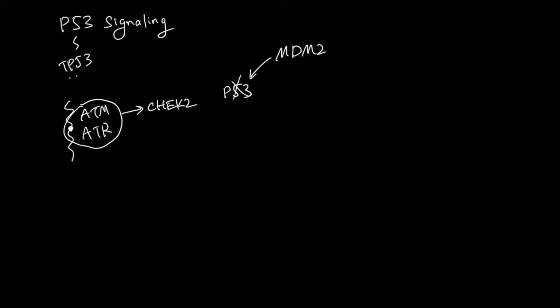But when CHK2 is activated, CHK2 is going to phosphorylate P53, and this P53 is now going to be MDM2-resistant. MDM2 is not going to be able to stop this phosphorylated P53 from working. So this is a way of activating P53.